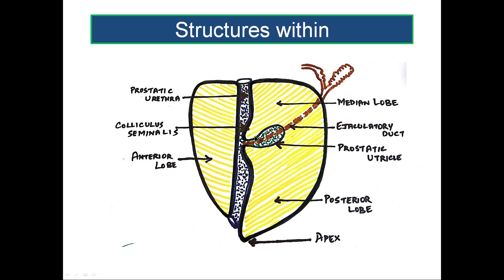It is supposed to be developing from the paramesonephric duct or the urogenital sinus. Occasionally it is also thought to represent the homologue of the vagina, so it is also called vaginalis masculina. The ejaculatory ducts pass obliquely downwards from the posterior surface to the prostatic urethra. They are formed by the union of the vas deferens and the seminal vesicle. These are the three structures within the prostate: the prostatic urethra, the prostatic utricle, and a pair of ejaculatory ducts.